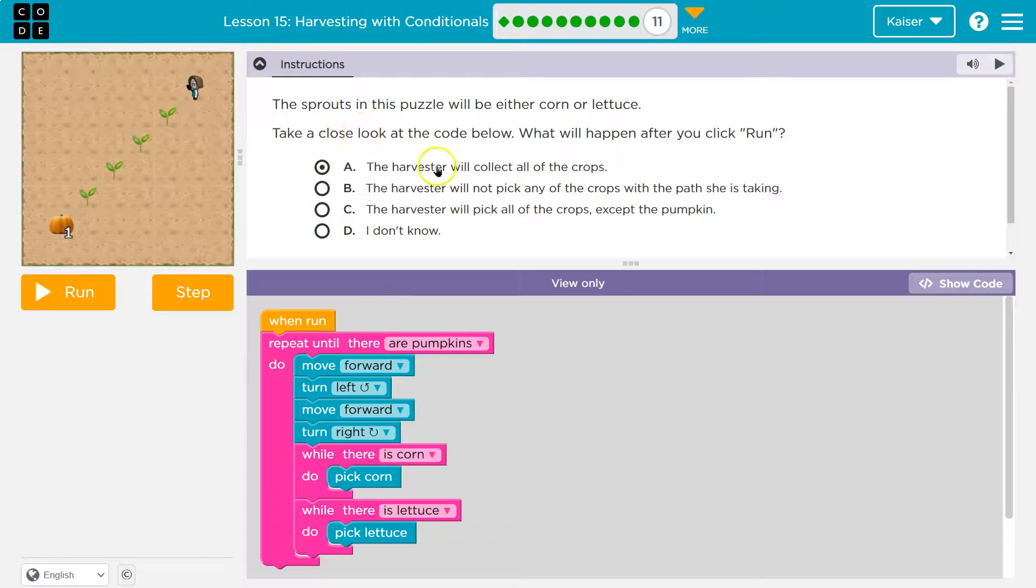Okay, the harvester will collect all of the crops. Well, I will collect all of the corn and all of the lettuce. The harvester will not pick any of the crops. I don't think so. I'm picking until there's a pumpkin. I'm going through, yeah. No, I don't think it's that one.